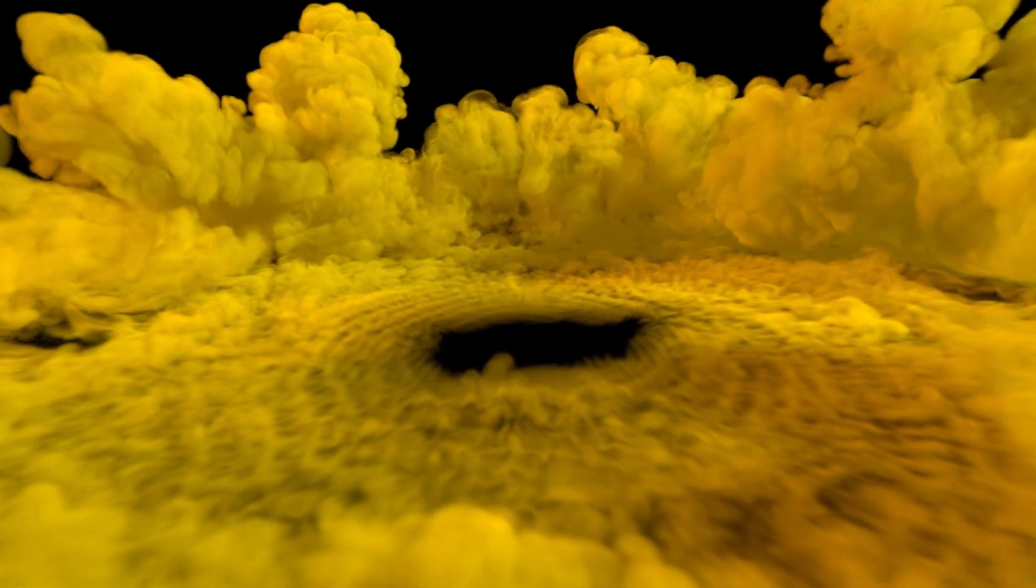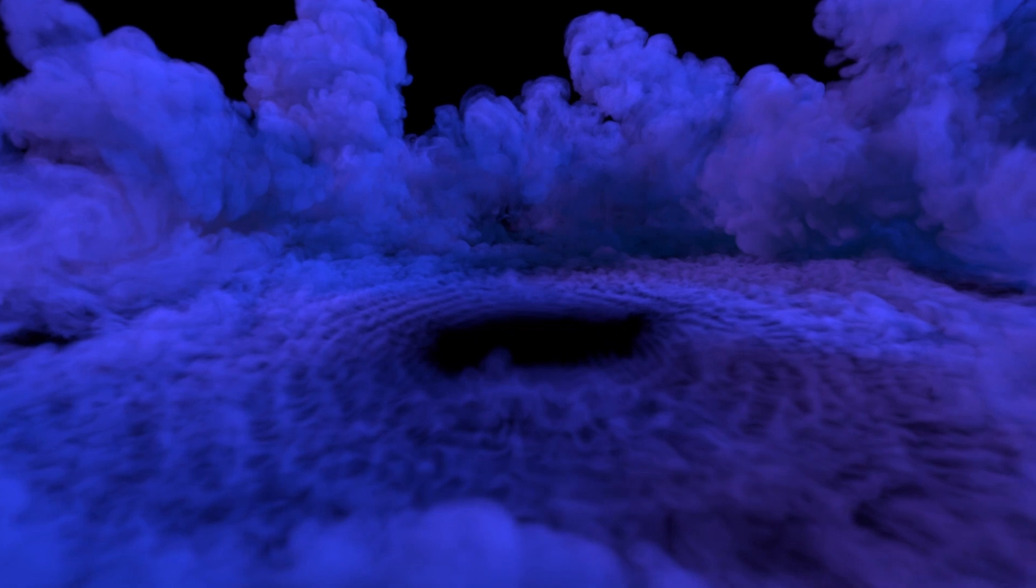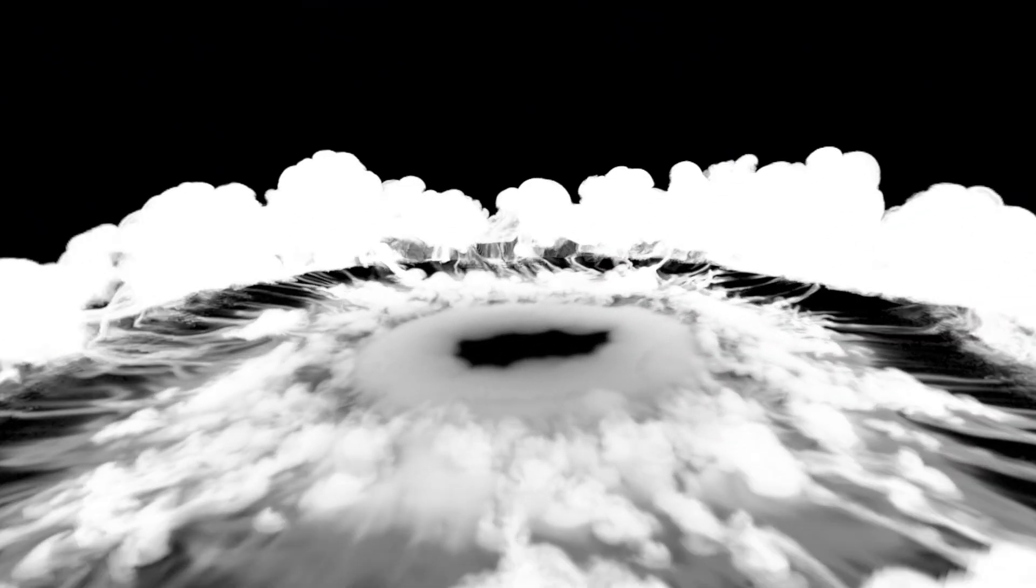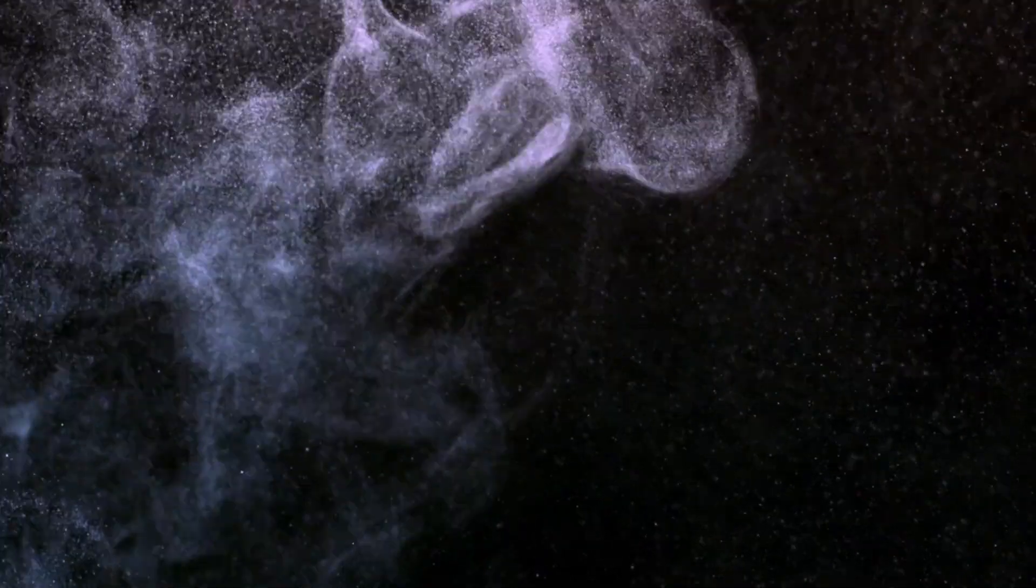However, the James Webb Space Telescope, JWST, has provided a completely different perspective on Neptune. Instead of visible light, Webb captures images in infrared wavelengths using its near-infrared camera, NIRCam. Infrared observations reveal details that are often hidden in visible light images, allowing scientists to study Neptune in ways never seen before. In Webb's images, Neptune appears significantly lighter, with a more muted and ghostly appearance compared to the vibrant blue seen in Hubble and Voyager images.